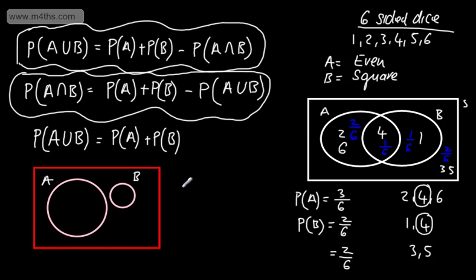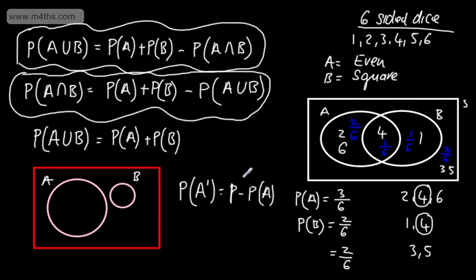One other thing we need: the probability of it not being A, written as A dash, equals 1 minus the probability of A. We looked at that in a previous video and it's an important result. When solving these problems, I like to use a combination of Venn diagrams and the formulae — I think Venn diagrams can be a good representation.